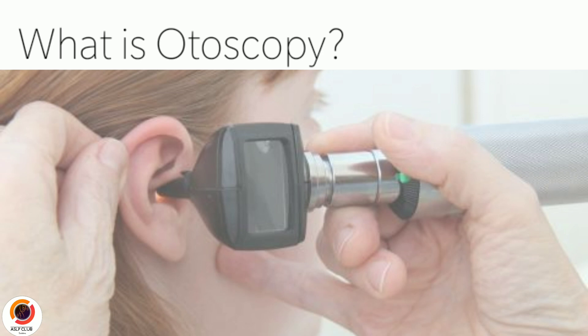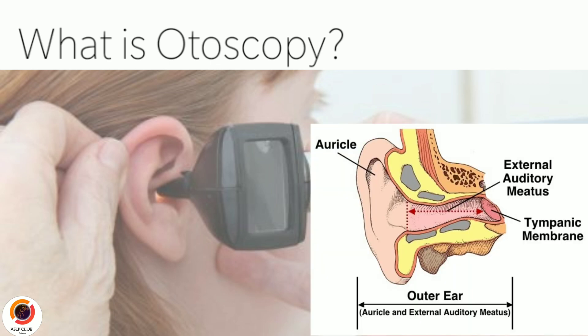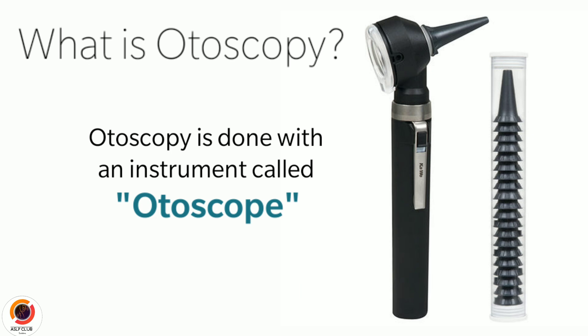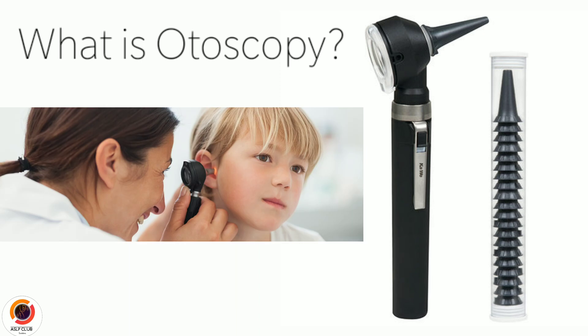So directly starting on the topic: what is otoscopy? Otoscopy is a clinical procedure used to examine structures of the ear, particularly the external auditory canal, tympanic membrane, and middle ear, with the help of an instrument called an otoscope. In simpler terms, with the use of a simple device called an otoscope, the healthcare provider — usually an audiologist or ENT — examines the ears and their structures by simply viewing and observing with the help of the otoscope.